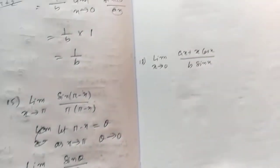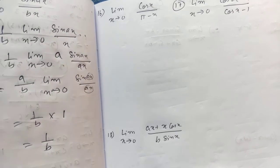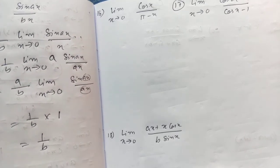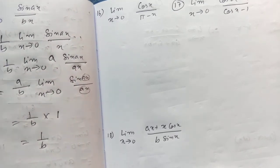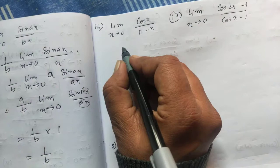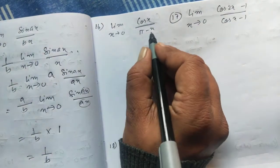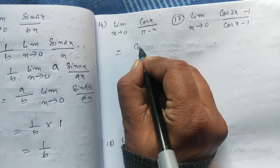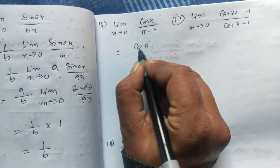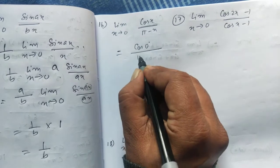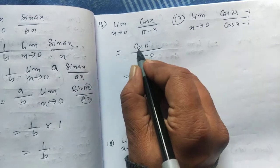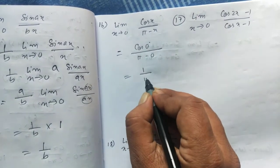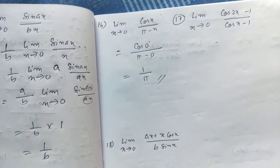This is question number 16. We can put the value directly because the denominator is not becoming 0. So cos(0°) / (π − 0) = 1/π, since cos 0 = 1 and π − 0 = π. That is the answer.